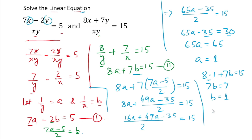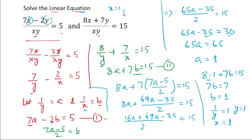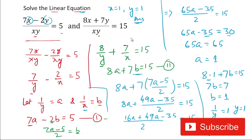Now we need to find the actual values of x and y. We had let 1 by y equal to a, and a equals 1, so if we take the reciprocal, y is equal to 1. Likewise, 1 by x is equal to b, and b equals 1, so the value of x is also 1. So the value of x is 1 and the value of y is 1. That is our answer. Hope you have understood the method.